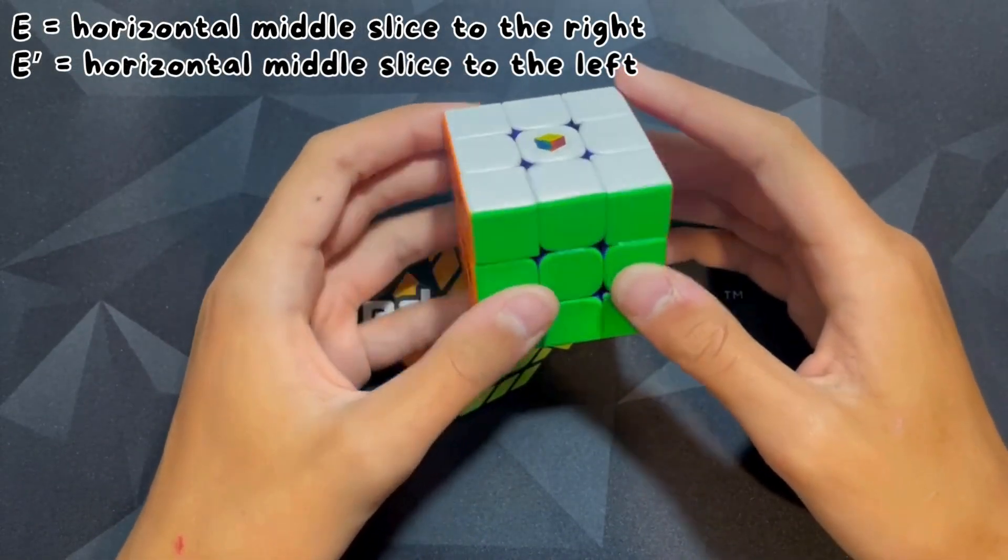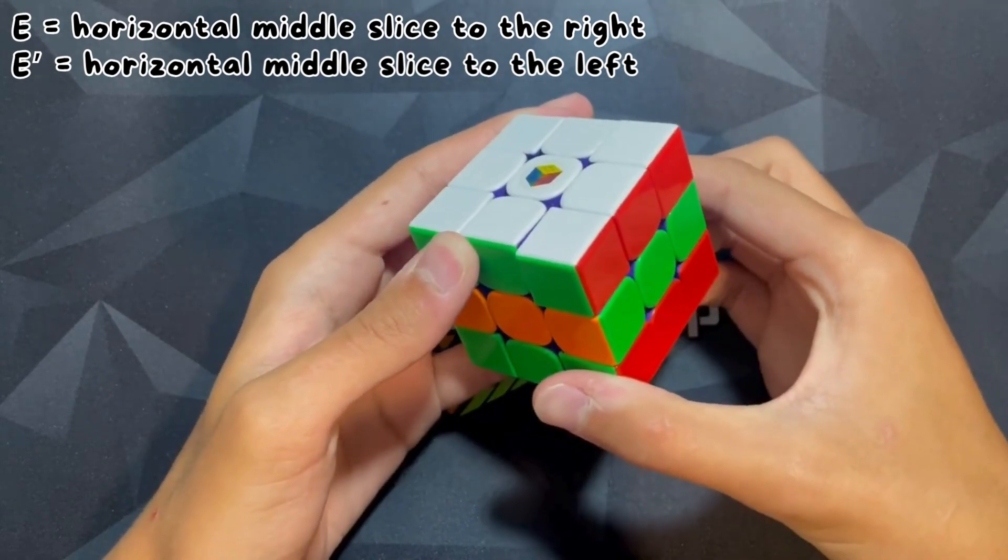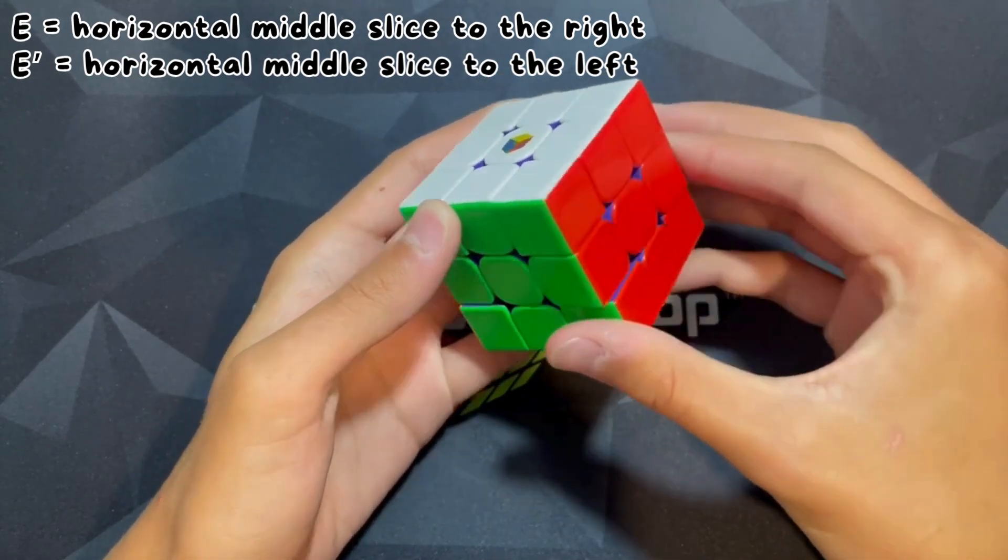Okay, now E. E is where you turn this layer like that. E prime is where you turn that layer back, E this middle layer to the right, E prime is that middle layer to the left.